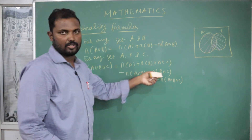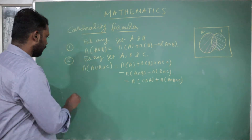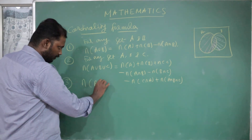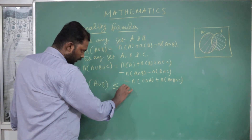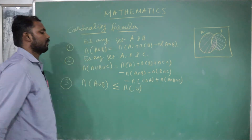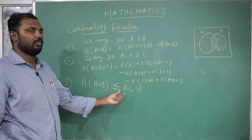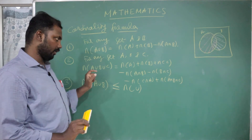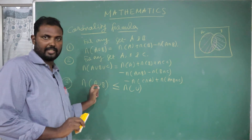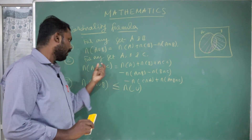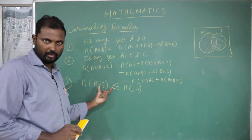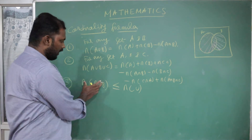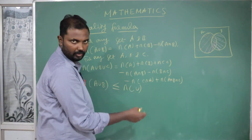N of A union B must be less than or equal to N of U, where U means the universal set. So A union B is contained within the universal set. If A union B equals U, then N of A union B equals N of U.